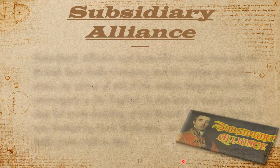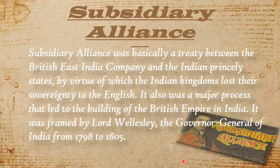First, we will discuss the subsidiary alliance. The subsidiary alliance system was a method perfected by Lord Wellesley, the Governor General of India from 1797 to 1805, to subjugate Indian powers without the cost and bother of war. Any Indian ruler whose security was threatened was encouraged to seek help from and enter into an alliance with the British, who promised to protect the rulers from external attack and internal revolts.